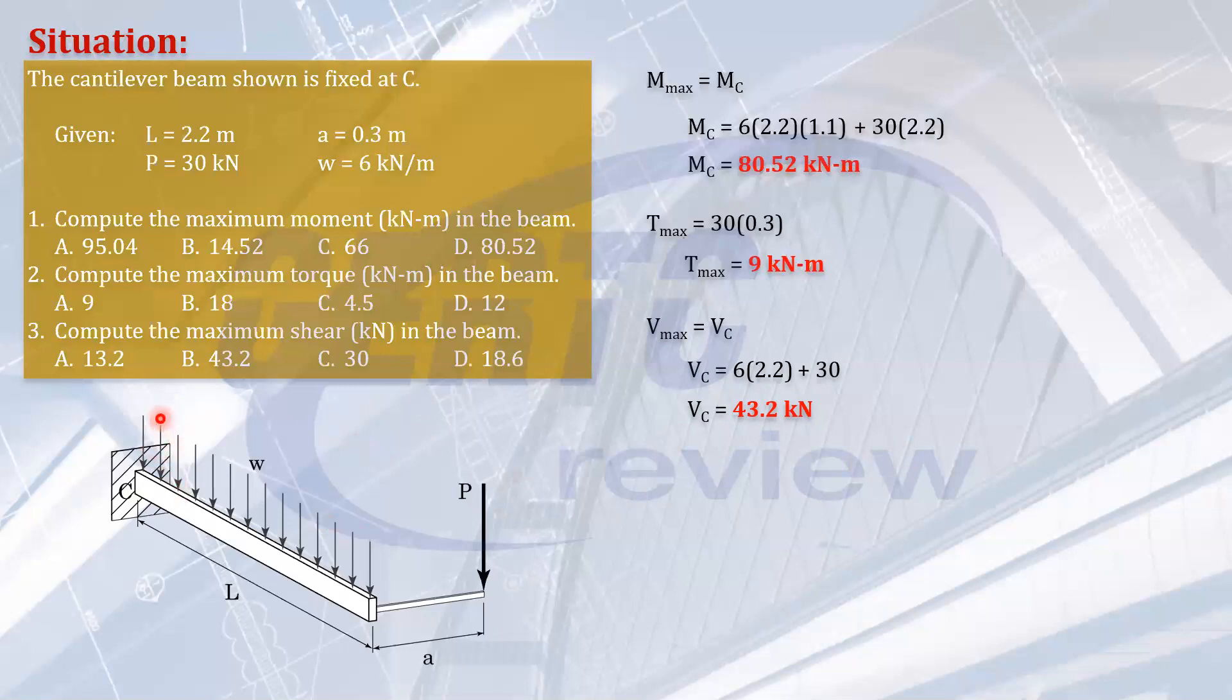Again for the sign, the proper sign must be—actually sorry, it's positive. It causes a clockwise shear, clockwise rotation: upward force here and downward here, clockwise. So that's correct. 43.2 kilonewtons. So I hope you got these answers.